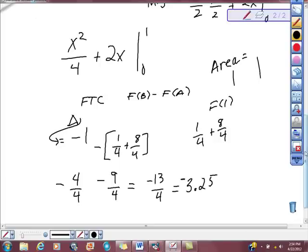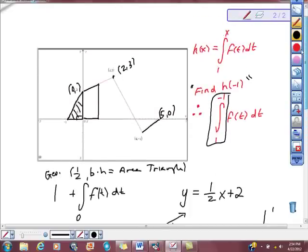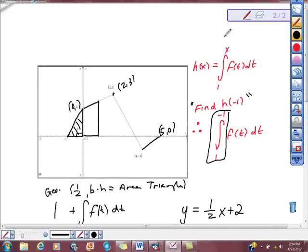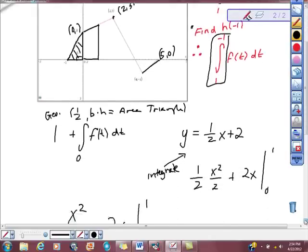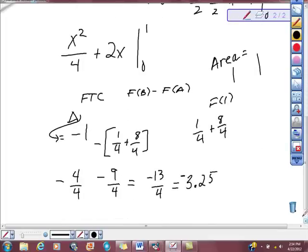However, that's not true here. If you look up here, they're not asking us that. They didn't say anywhere in our problem that they wanted area. They said it's the definite integral. And definite integrals can be negative. Area can't be negative. So this answer is negative. So we can say that h of negative 1 is equal to negative 3.25.